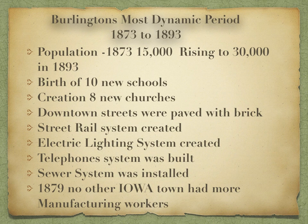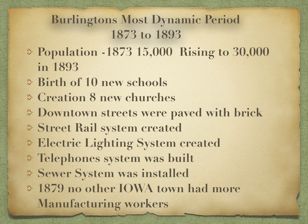What was happening in Burlington when all of this growth was occurring and our church was being first occupied? In 1873, the population became 15,000, rising to 30,000 in 1893. The city built ten new schools and created eight new churches. Downtown streets were paved with brick. The street rail system, electric lighting system, and telephone system were created. Sewer systems were installed. In 1879, no other Iowa town had more manufactured workers.